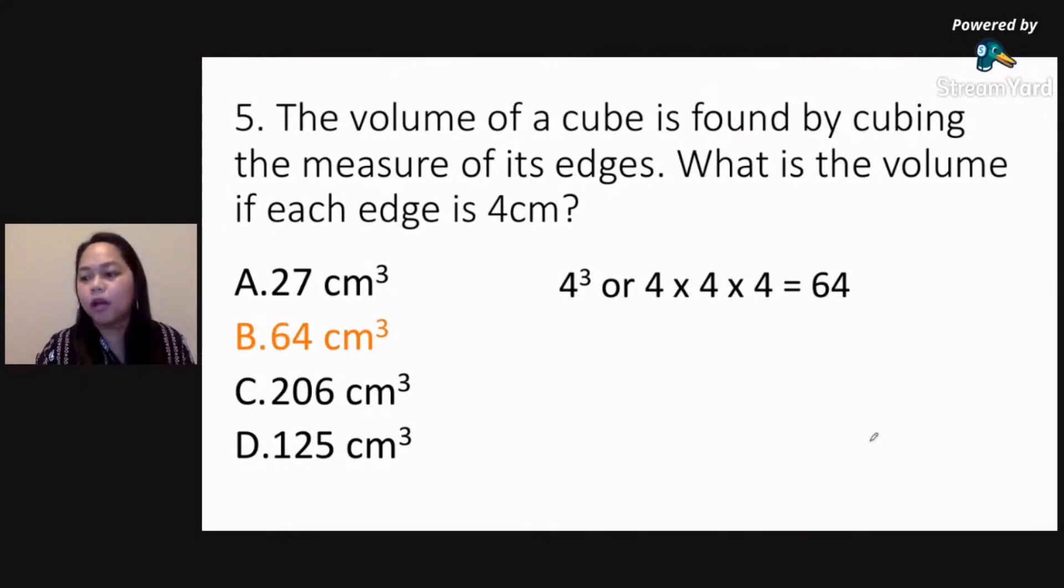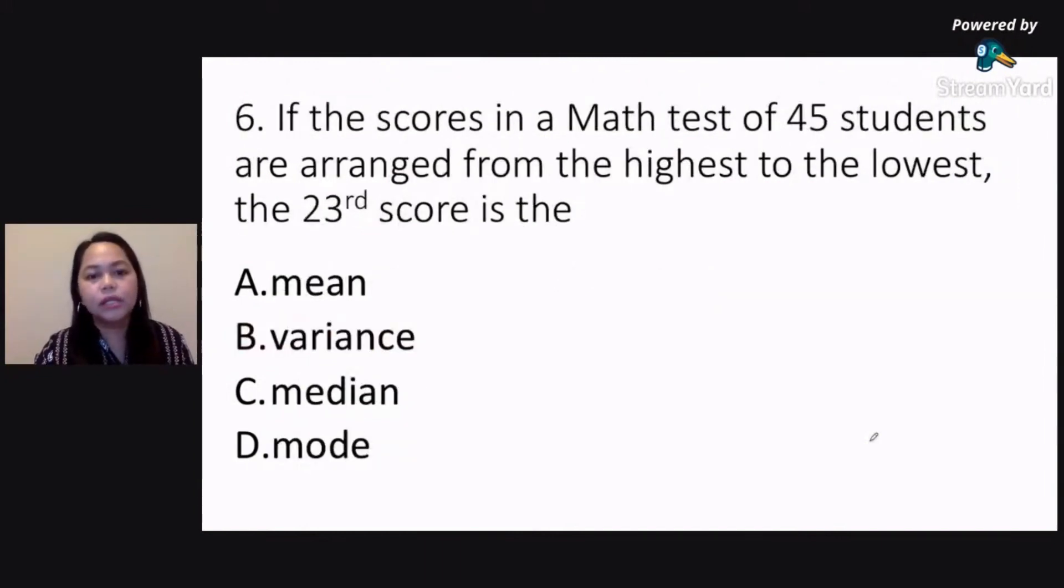Please put a check mark if your answer is correct. Now we go to number six. If the scores in a math test of 45 students are arranged from the highest to the lowest, the 23rd score is the blank.